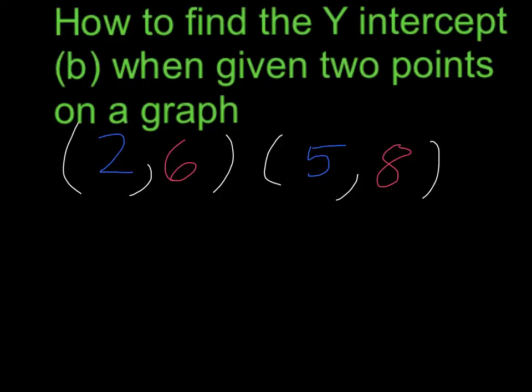The y-intercept is the point at which a line starts on a graph. So for example, if we had a graph here and we had a line here, the y-intercept would be right here, the point where the line starts.